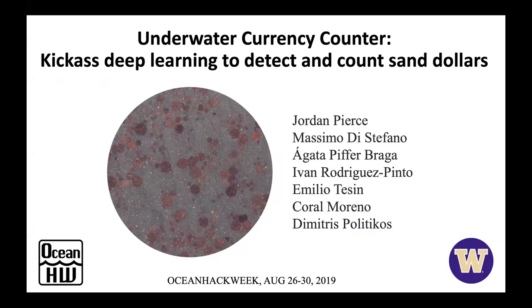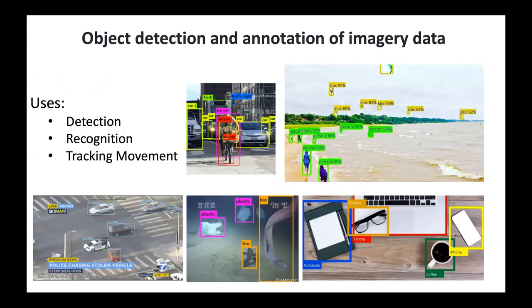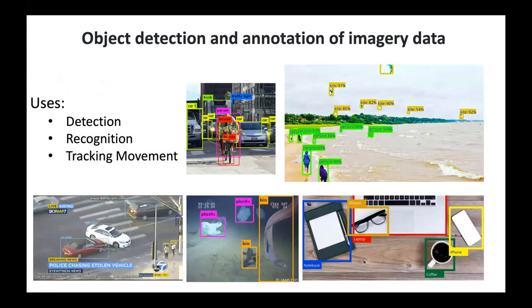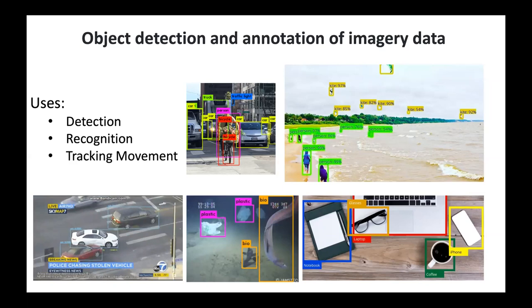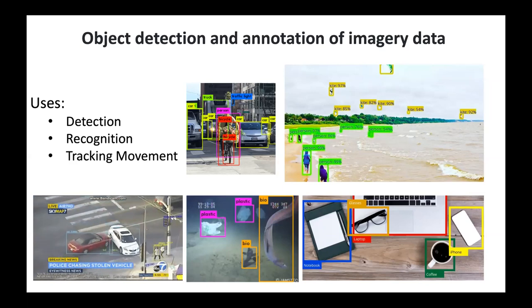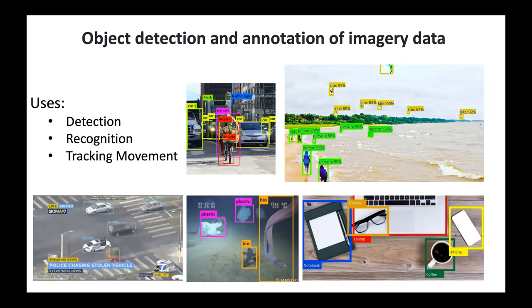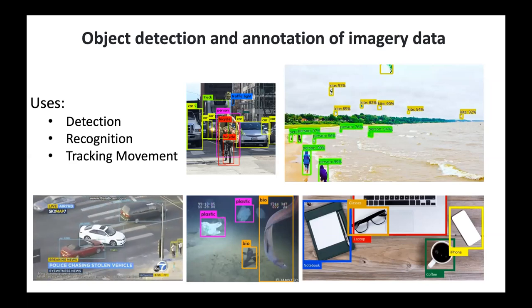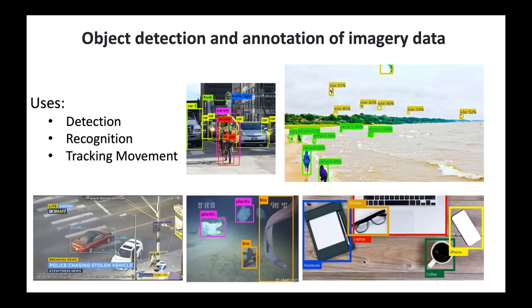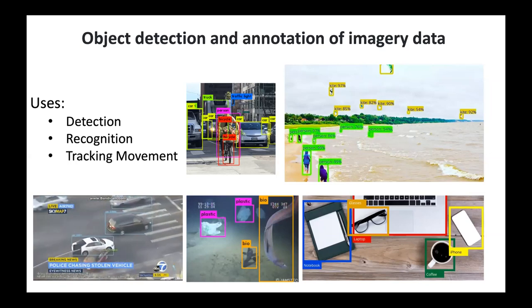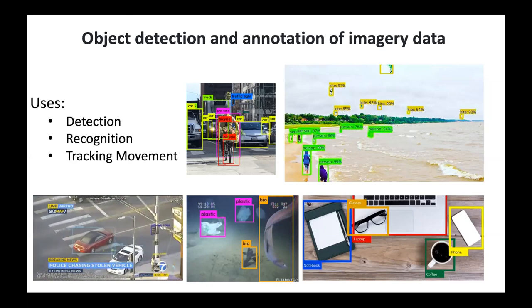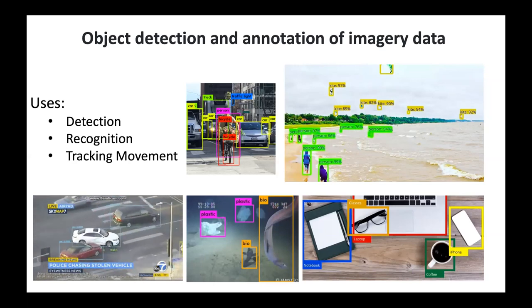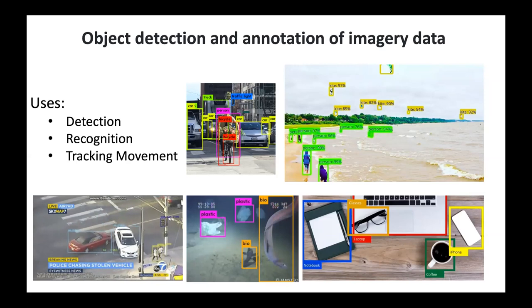I'm going to present a nice implementation of deep learning on imagery data. Our project is related to object detection topic, which is an intersection of computer technology that combines image processing and computer vision and tries to detect and annotate objects from imagery data. As you can see, there are many applications and its main task is to detect, so it creates a bounding box. As a second step, it can recognize different types of objects and also it can be applied for tracking objects over time.